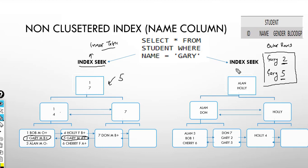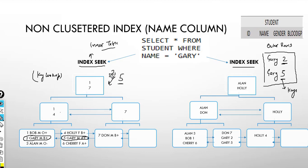Index seek happens for both records. Here I was searching for keys — first the details of key number two, then the details of key number five. Searching for these keys is known as key lookup. This concept is key lookup, and there is one more concept known as nested loop.